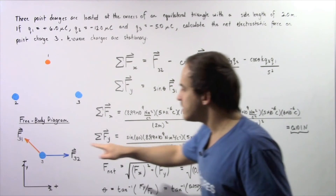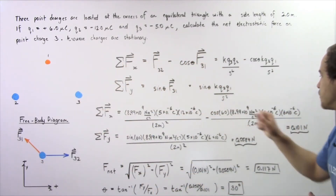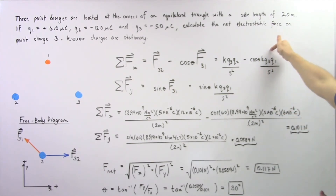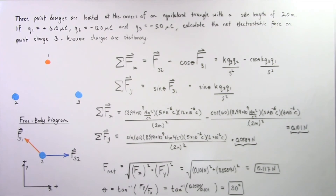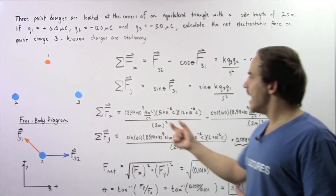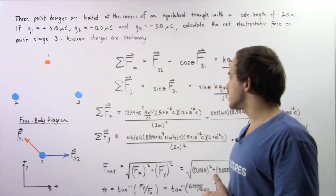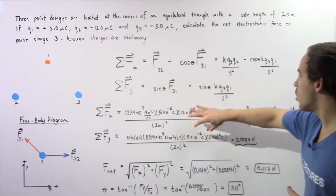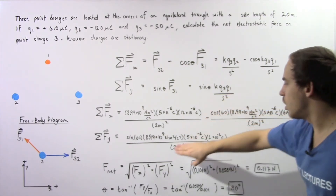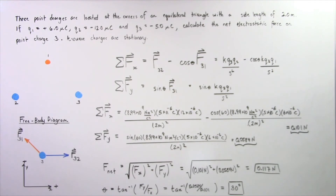We subtract cosine of 60 degrees, which equals 0.5, multiplied by k times q3 times q1 divided by two squared, and we get approximately 0.101 newtons for the x-component. For the sum of forces along the y-axis, sine of 60 degrees multiplied by k times q3 times q1 divided by two squared gives us 0.0584 newtons.